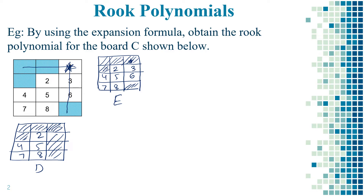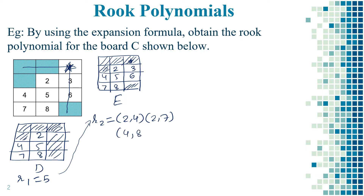Now let's find the rook polynomial for Board D. The number of squares present is r1 = 5. For r2, the possible positions for placing two pawns are: (2,4), (2,7), (4,8), and (5,7) — so r2 = 4. For r3, placing three pawns: the first on two, the second on four, and the third has no valid square since eight and seven share a column — so r3 = 0.